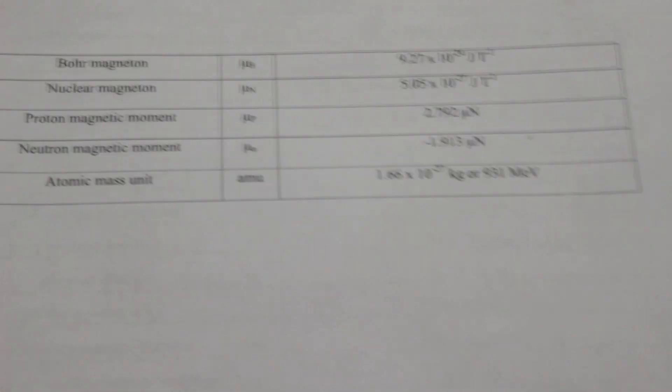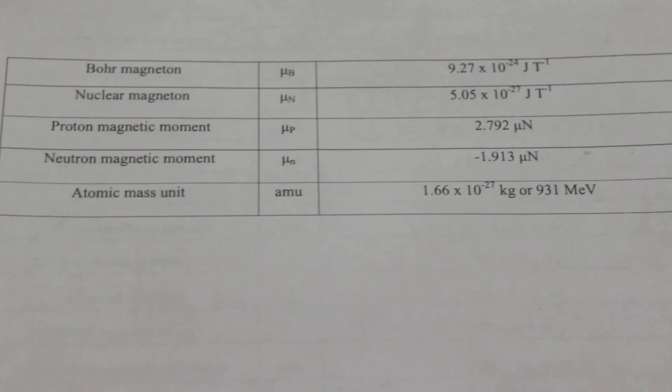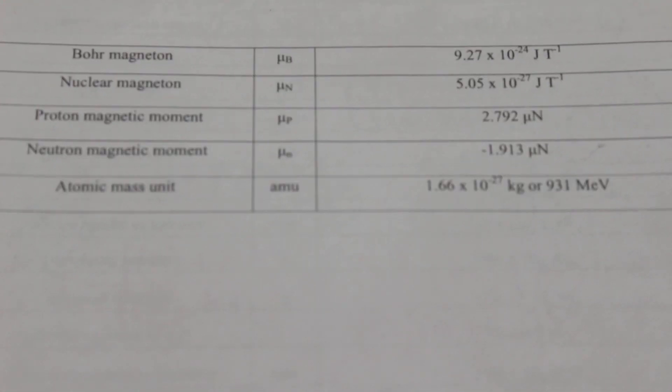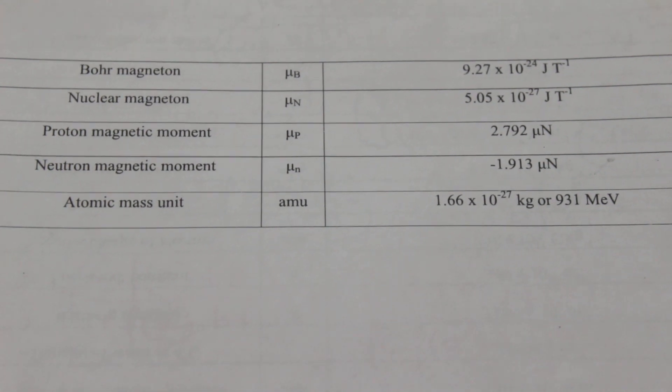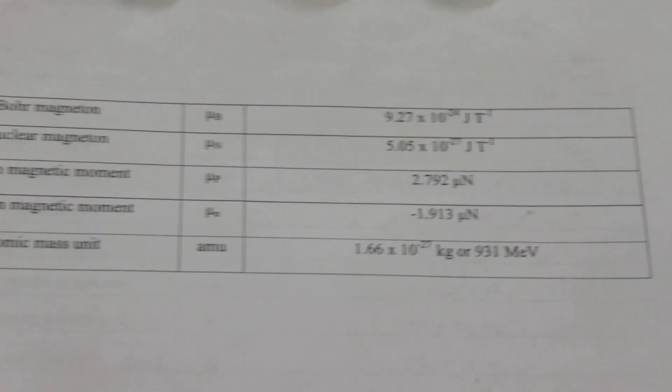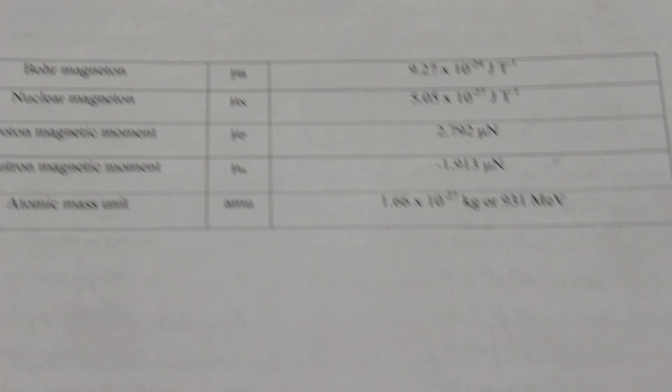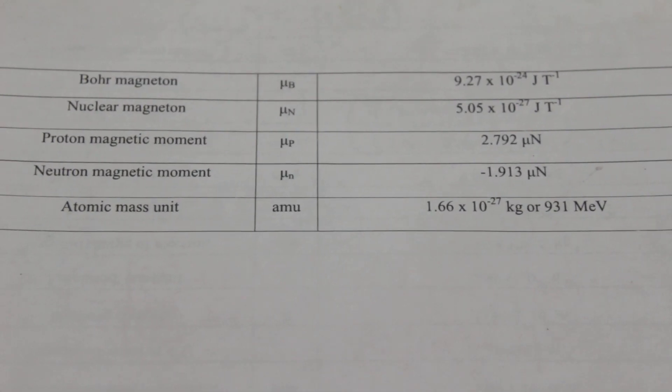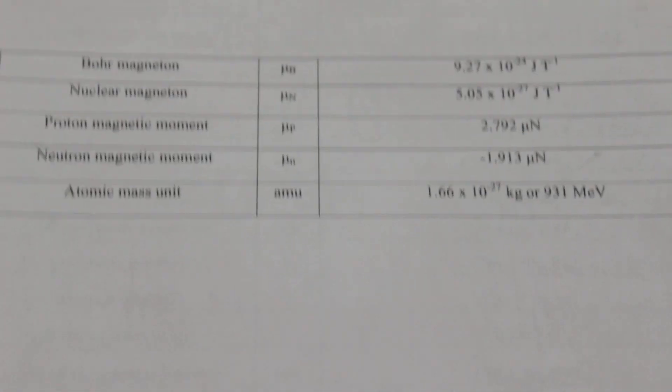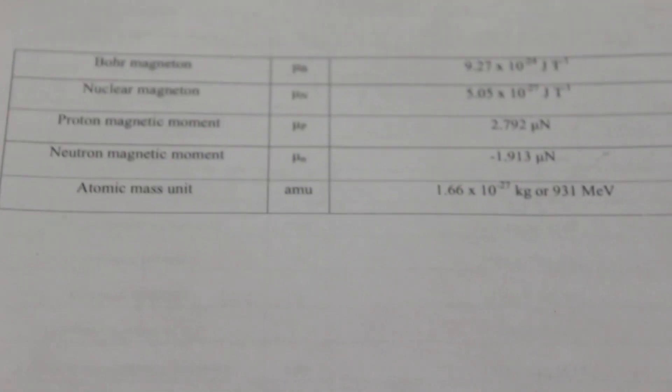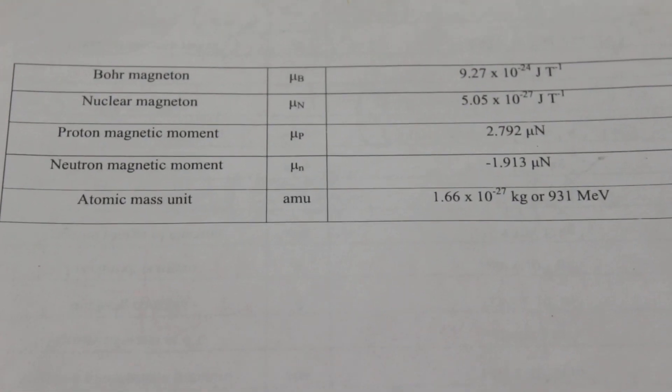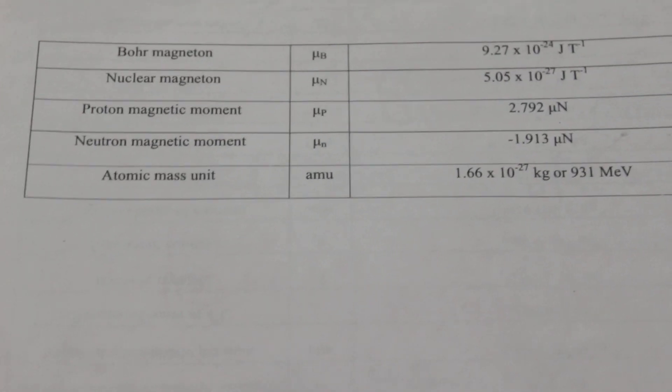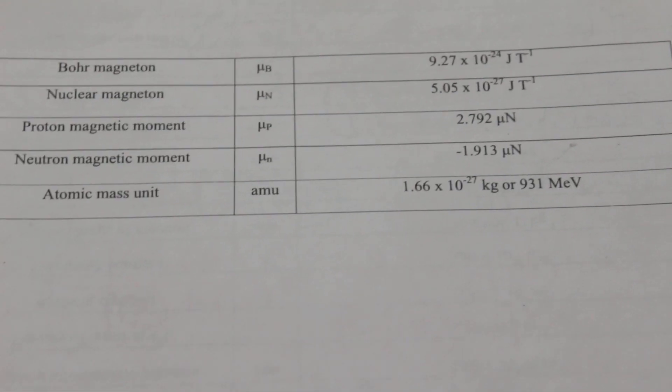Next is Bohr magneton mu B, 9.27 times 10 to the power minus 24. Nuclear magneton mu N, 5.05 times 10 to the power minus 27. Proton magnetic moment mu p, 2.792 mu N, that means micro Newton. Neutron magnetic moment minus 1.913 mu N. Atomic mass unit, that means 1 amu, that is 1.66 times 10 to the power minus 27 kg or 931 mega electron volts.